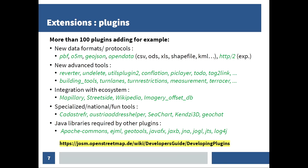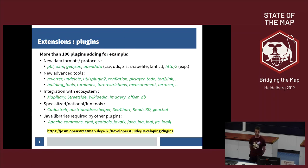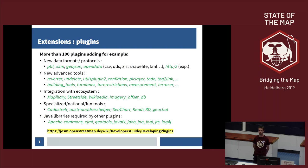In terms of extension, the main way to extend JOSM is by plugins. The community has created more than 100 plugins — this is only a brief list of the most popular plugins grouped in five categories. You can find plugins that add new data formats and protocols, then plugins with more advanced editing tools, especially the Reverter plugin. Next, plugins that add integration with various ecosystems around OpenStreetMap — I'm thinking about Mapillary or Wikipedia. Then very specialized or localized tools for specific countries, and also very technical plugins that ship libraries required by other plugins.